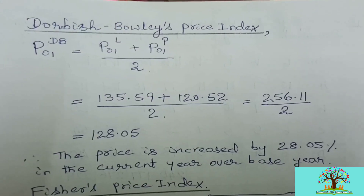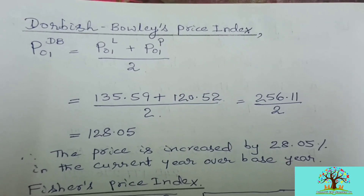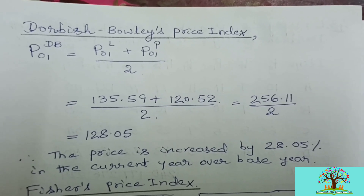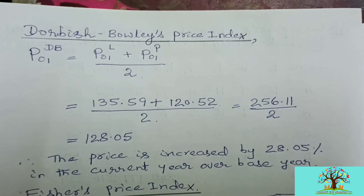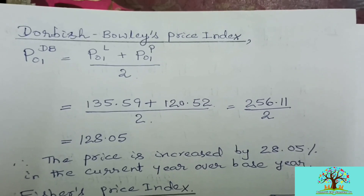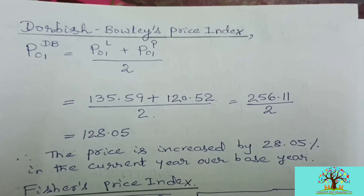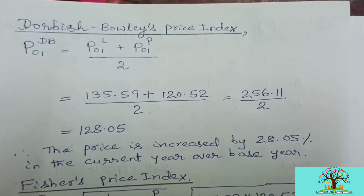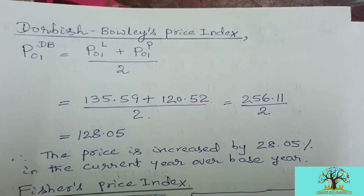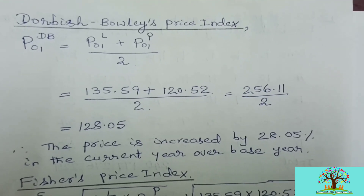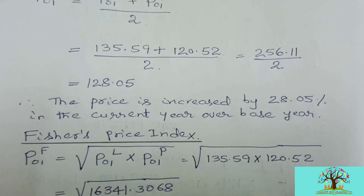Next is Dorbish-Bowley's price index number. The easy method: if they ask you to find Dorbish-Bowley or Fisher's price index, just calculate Laspeyre's and Paasche's price indexes, then add both and divide by 2. The formula is: P01(DB) = (P01(L) + P01(P)) divided by 2. Substituting values divided by 2 gives 128.05. Subtracting 100 gives 28.05 percent increase. Conclusion: the price increased by 28.05 percent in the current year over the base year.